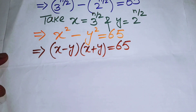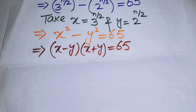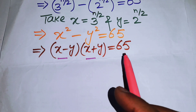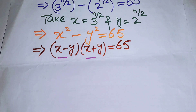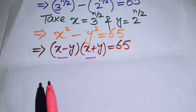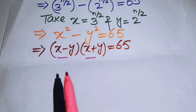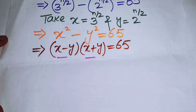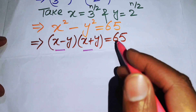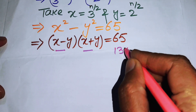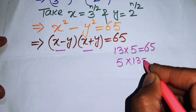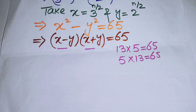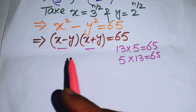On the left-hand side we have two factors: x minus y, and x plus y. On the right-hand side we have one factor, so we convert 65 into two factors. The non-trivial factors of 65 are: 13 times 5 equals 65, and 5 times 13 equals 65.